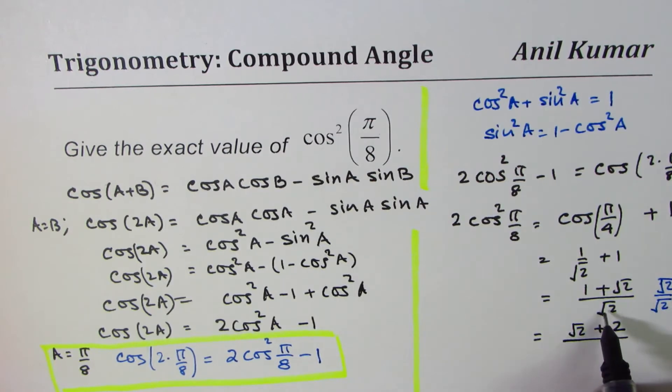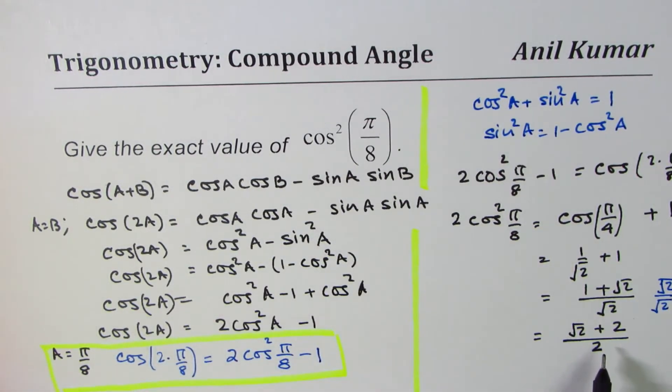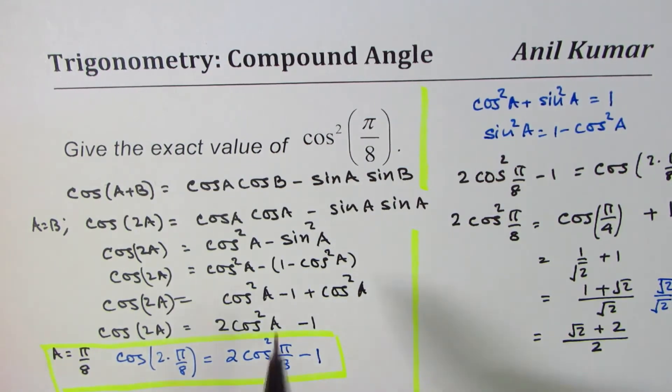√2 times √2 is 2, right? So this is what you get as your answer. So the exact value of cos²(π/8) is indeed this. Perfect. So how should you do it? You should do it starting from the formula itself. This is a very useful formula.